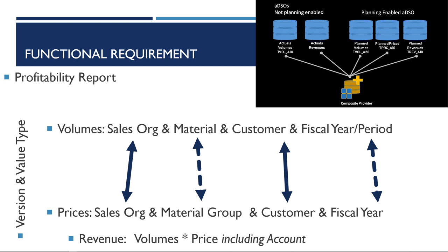Prices can only be planned on a higher level. For example, we cannot plan prices on material and customer level — only on material group and customer. In some instances we may have prices applying to all materials within a material group, while material group and customer specific prices may also exist.